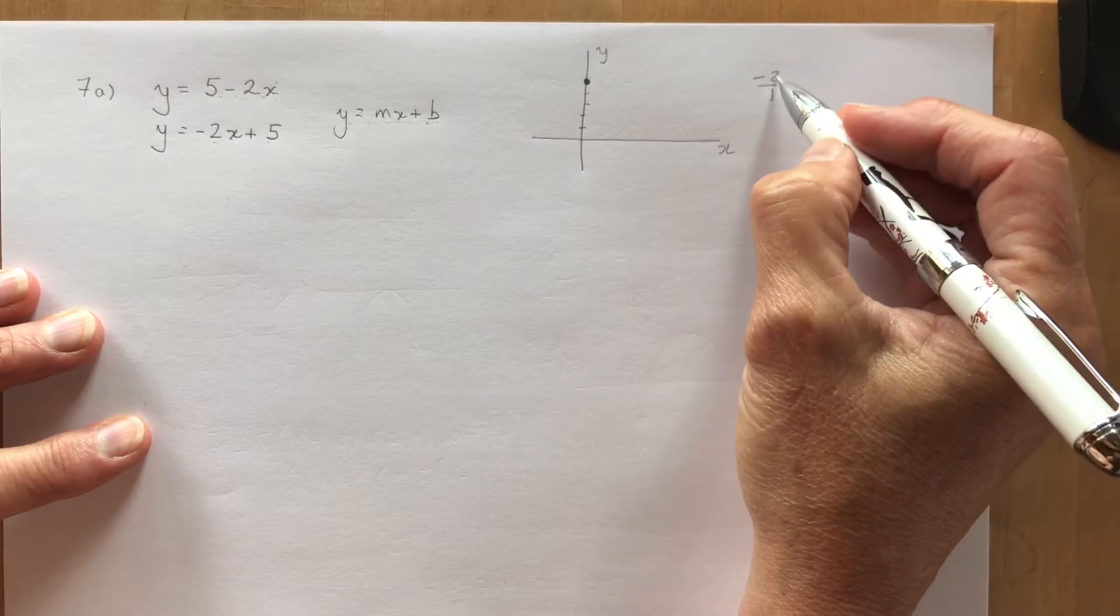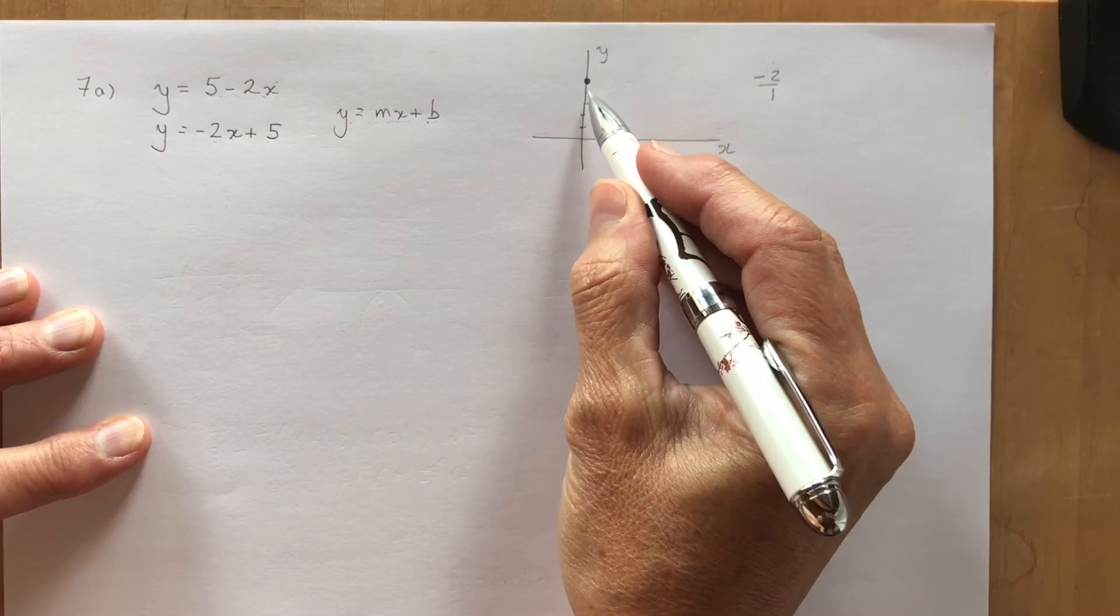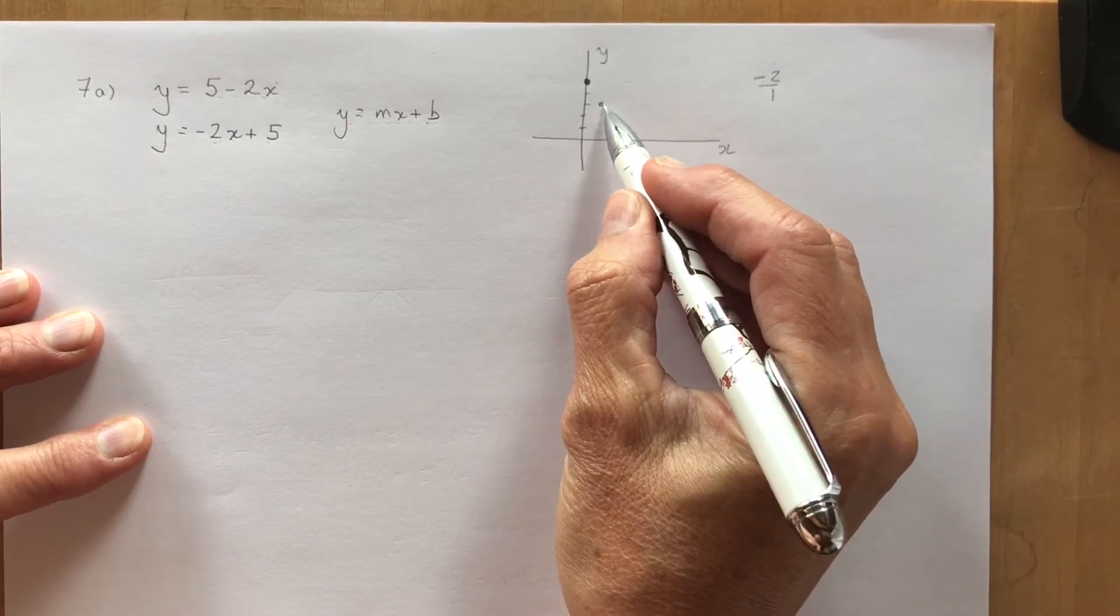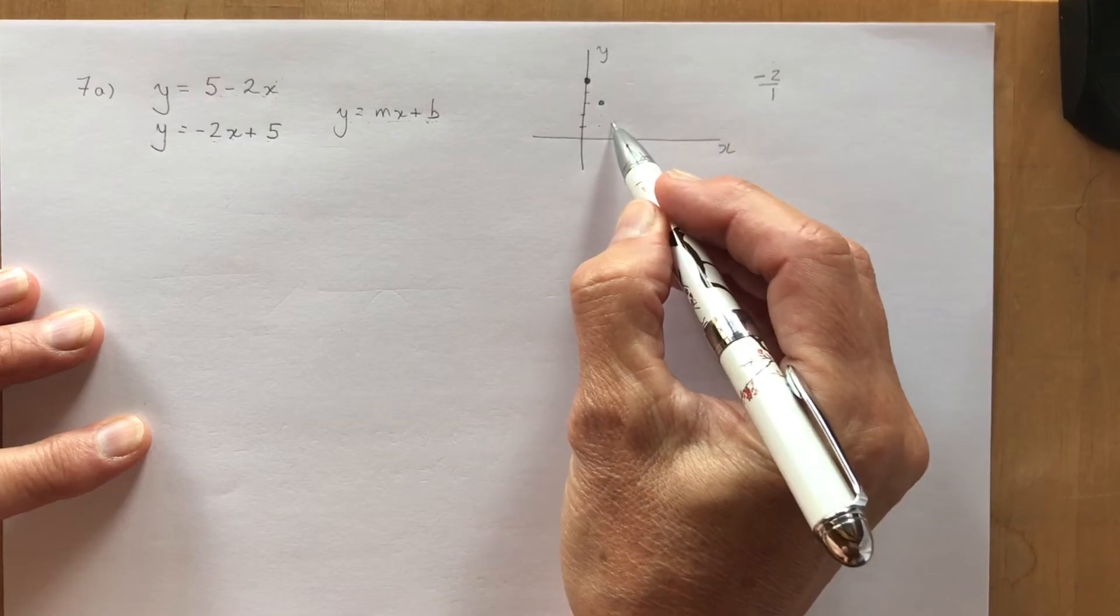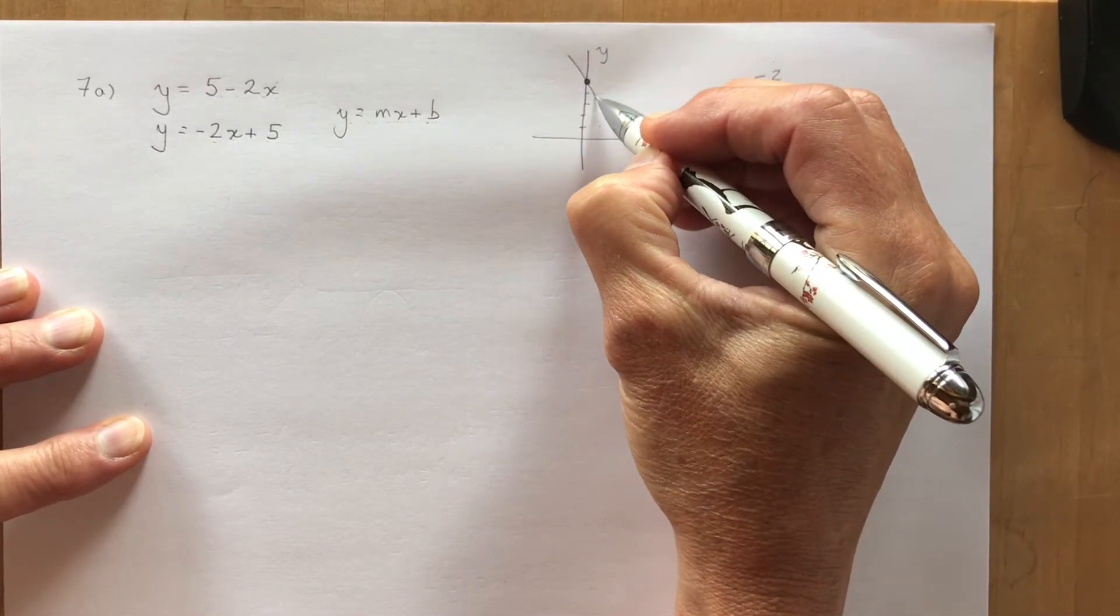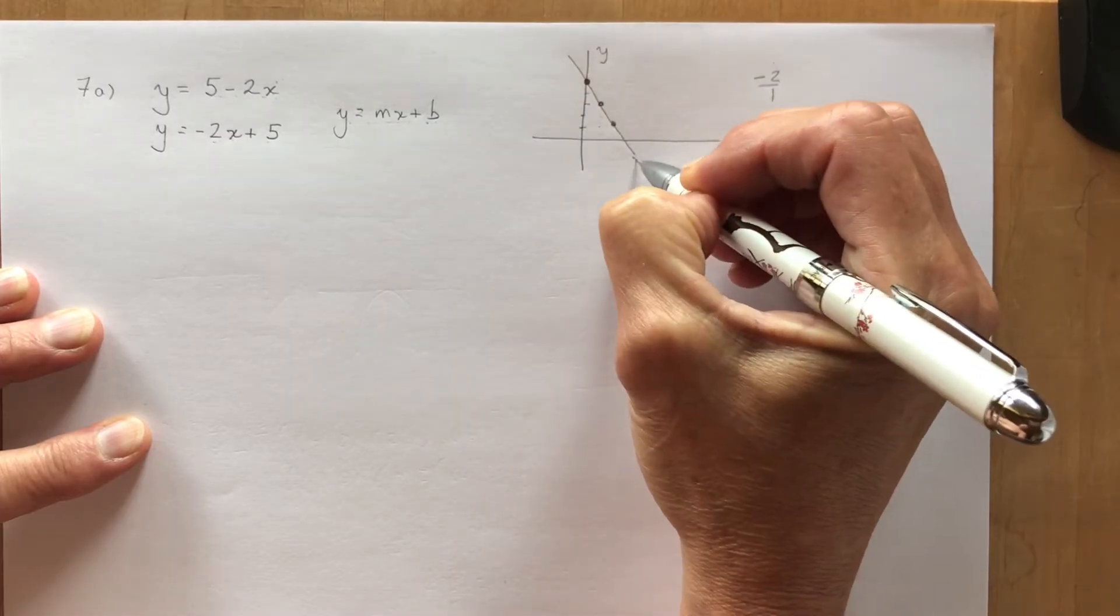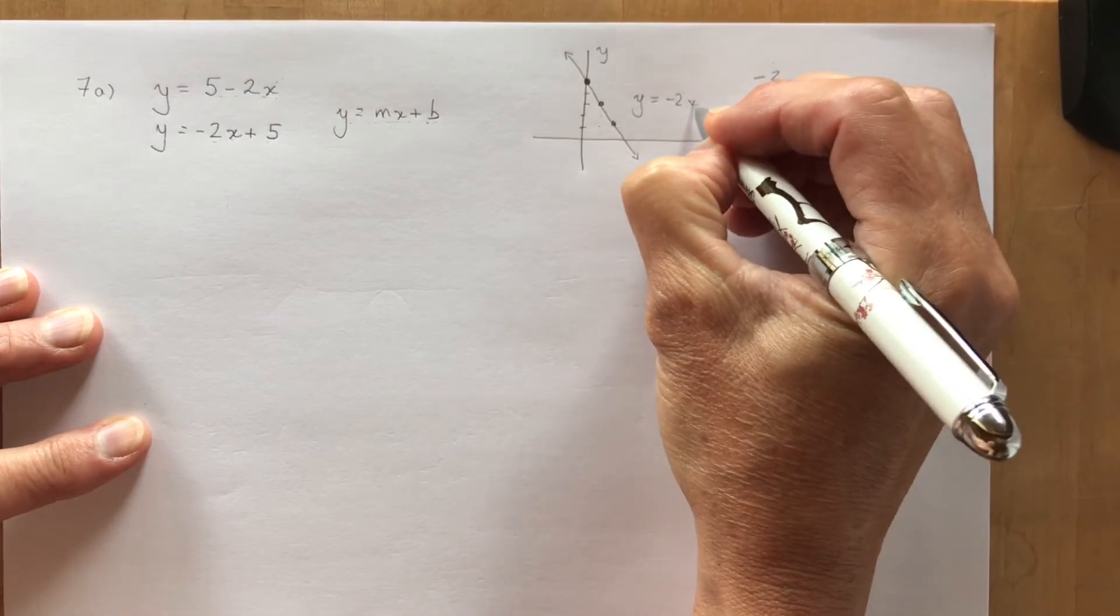So this says I go down 2 and right 1. So from here I would go down 2, right 1 and I could keep going down 2, right 1. I only really need 2 for a line. I draw a line through it and that is the equation of the line y equals minus 2x plus 5.